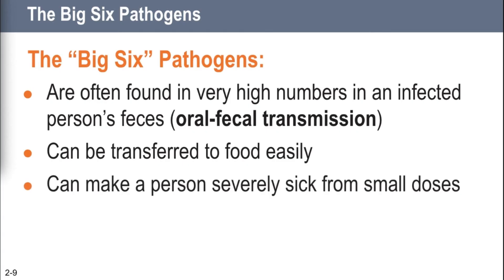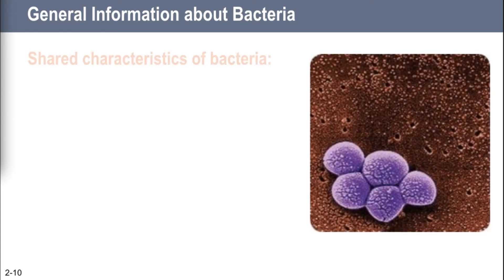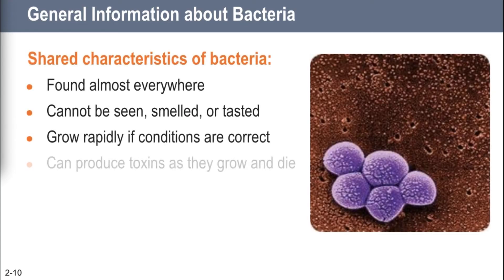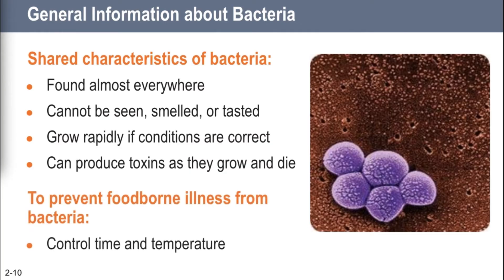The Big Six have commonalities: they are almost always found in people's feces. If you're sick with one of these bacteria or viruses, it will be in your feces, and transmission is via the fecal-oral route — not washing hands thoroughly after using the bathroom. They can be transferred to food very easily, and even a very small dose can make a person very, very sick. All four bacteria are almost everywhere, can't be seen or smelled or tasted, grow fast if FAT TOM conditions are right, and can produce toxins as they grow and die.